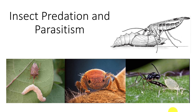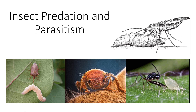Parasitoids can be further broken down to those that live internally, endoparasitoids, and externally, ectoparasitoids. If they do not normally kill the animals, then it is a parasite, which can also be internal or external. A host attacked by a parasite or a parasitoid is considered parasitized.